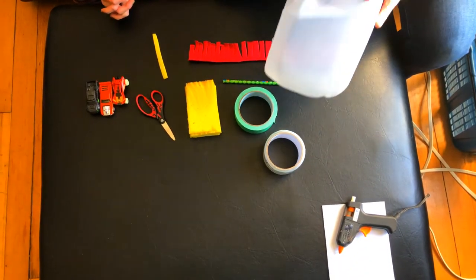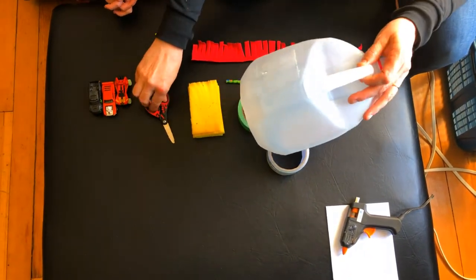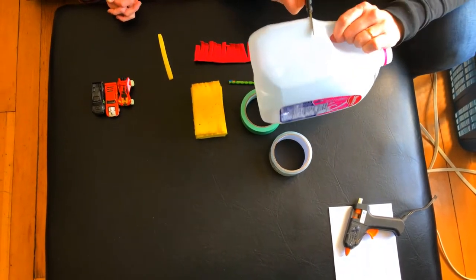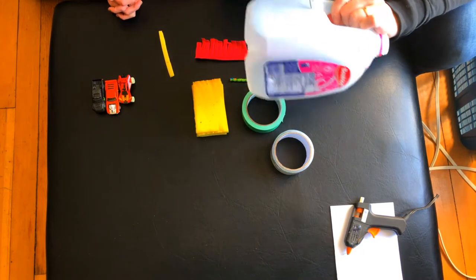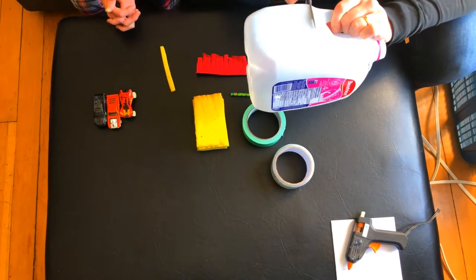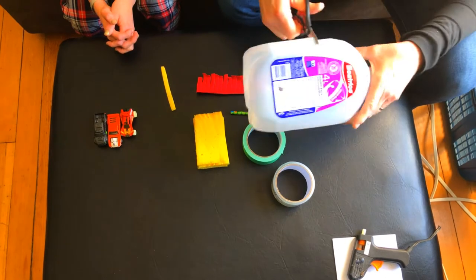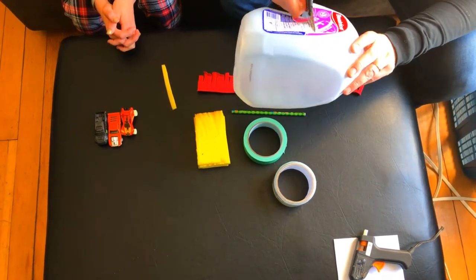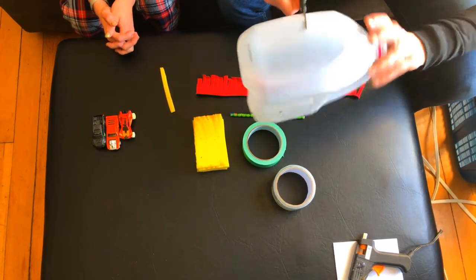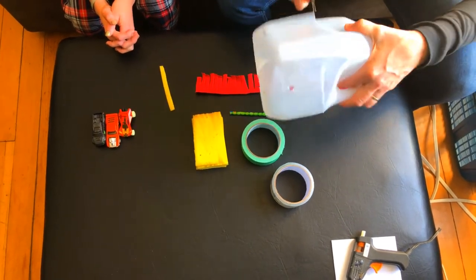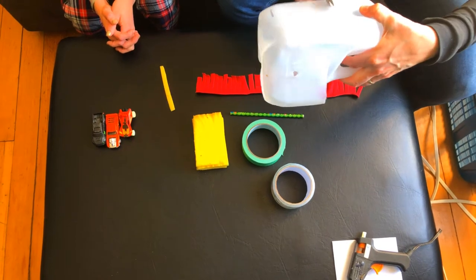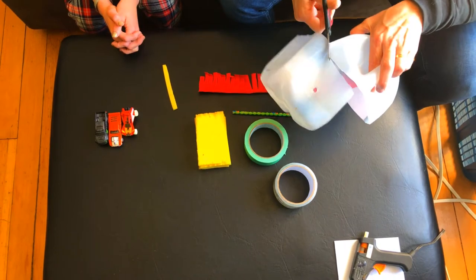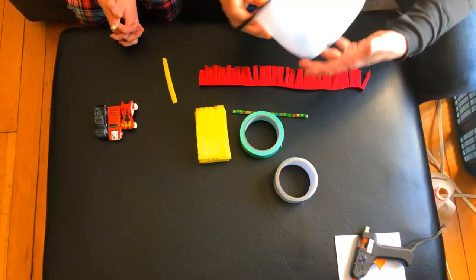We're going to take an empty milk jug that's been rinsed. We've already started cutting—we're going to cut the bottom portion off the milk jug, and this is going to be our main part of our car wash or toy wash. I was trying to tell Owen maybe he could wash some of his superheroes, but he assures me that they shower regularly, so we're only doing cars today. Oh, I made it a little crooked. We'll fix this and make it a little straighter.